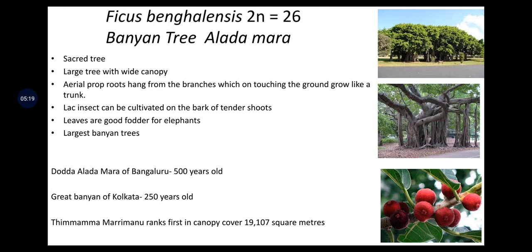Ficus bengalensis (2n = 26) is the banyan tree, also known as Aladamara. This is a sacred tree — a large tree with a wide canopy. Aerial prop roots hang from the branches, which on touching the ground grow like a trunk. Lac insects can be cultivated on the bark of tender shoots. Leaves are good fodder for elephants. The largest banyan trees are found in many parts of India; the Doddaāladamara in Bengaluru is 500 years old, and the Great Banyan of Kolkata is 250 years old.